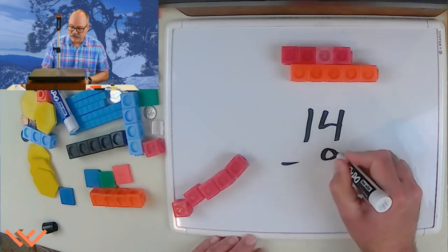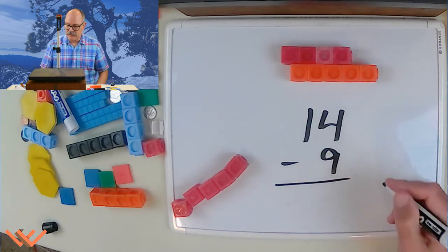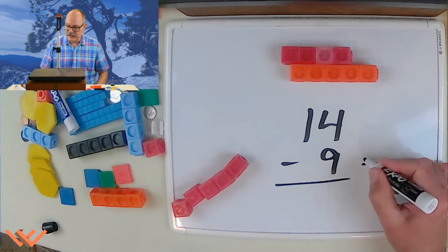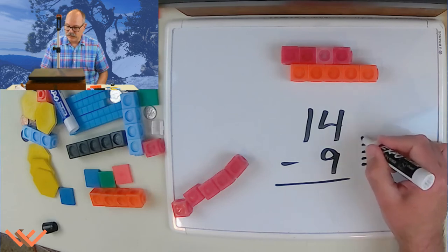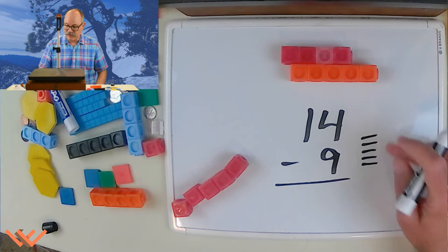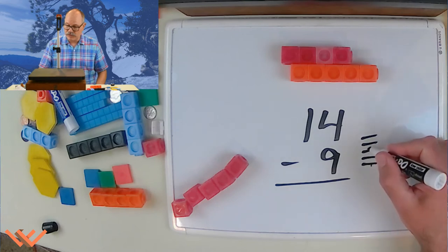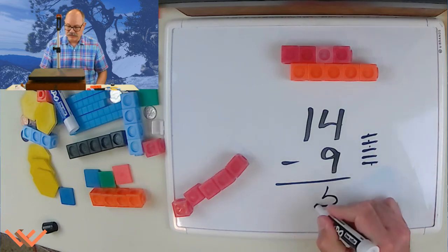We can do it in the equation as well. 14 minus 9. We're going to count up. 9, 10, 11, 12, 13, 14. Count my hash marks for counting up. 1, 2, 3, 4, 5. We got the same answer. There's 5.